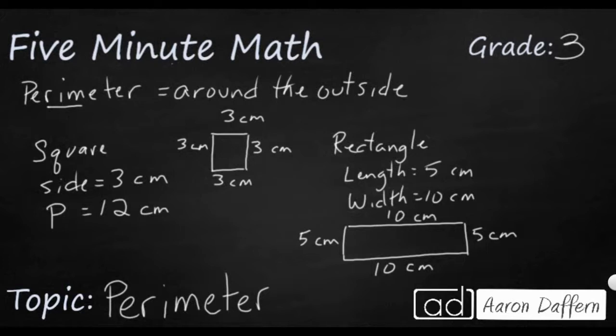Now I can add up 10 and 10 and five and five, or I can multiply two times 10, multiply two times five, and I can add the two products. Either way, our perimeter is going to be 30 centimeters.